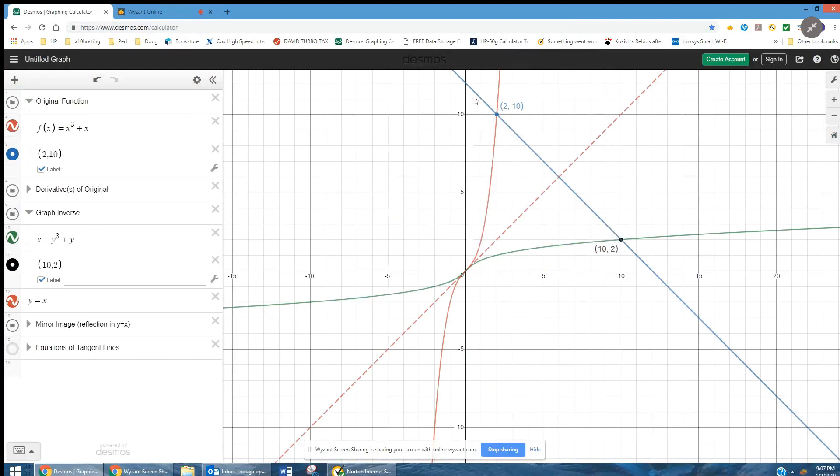And I can actually kind of show that here. There is a line that goes through 2, 10, 2 comma 10 with the slope of negative one. And it does go through 10, 2. And the red dotted line and the blue line are perpendicular.